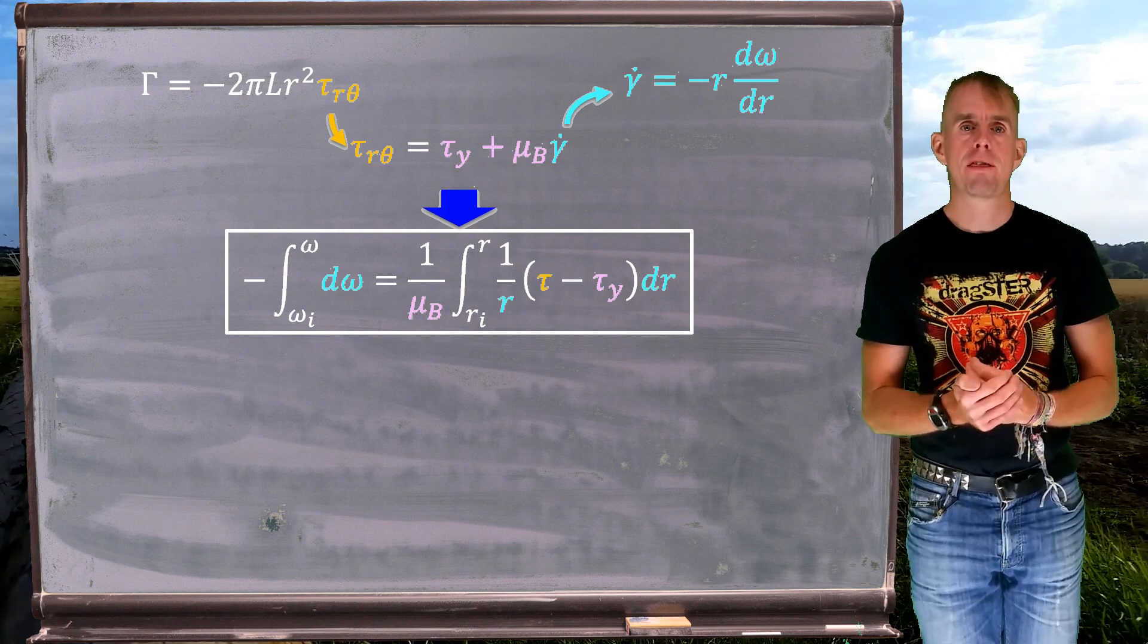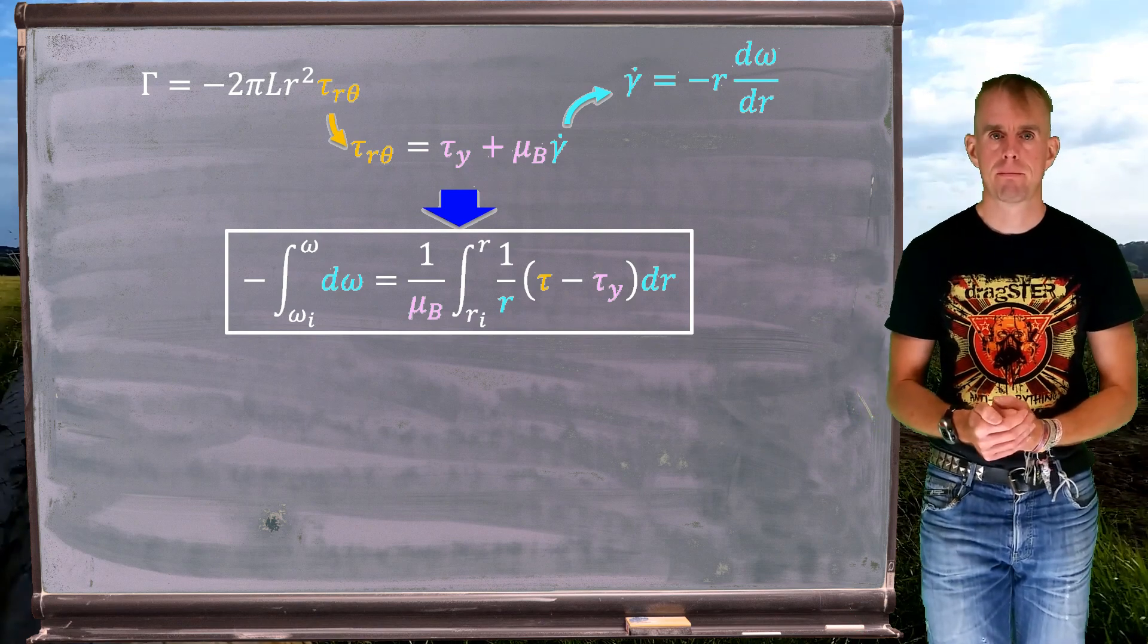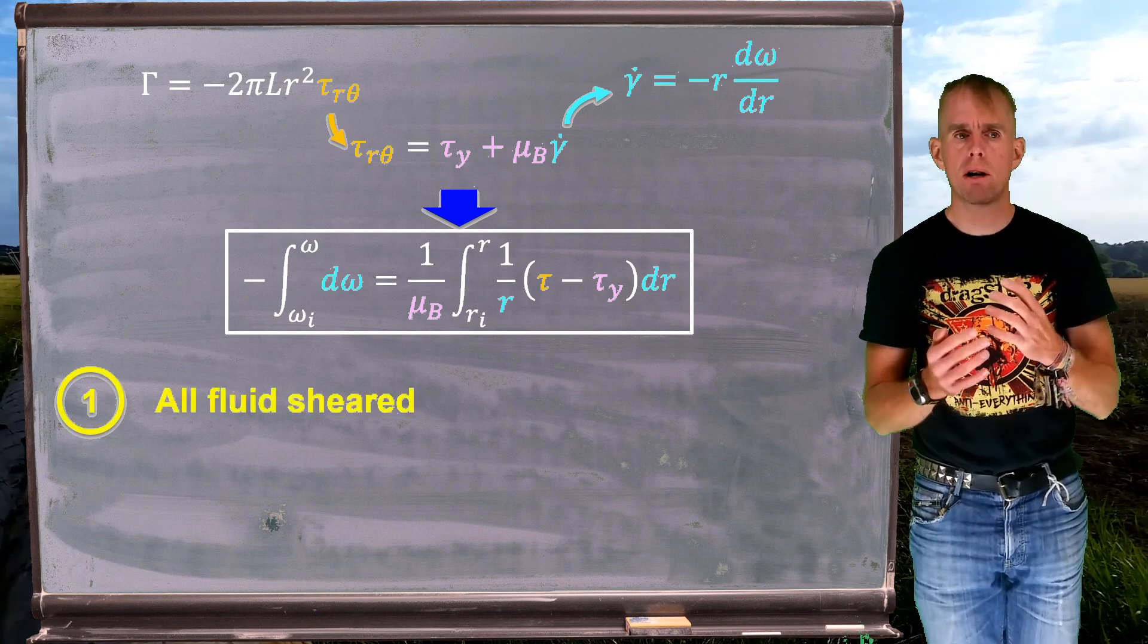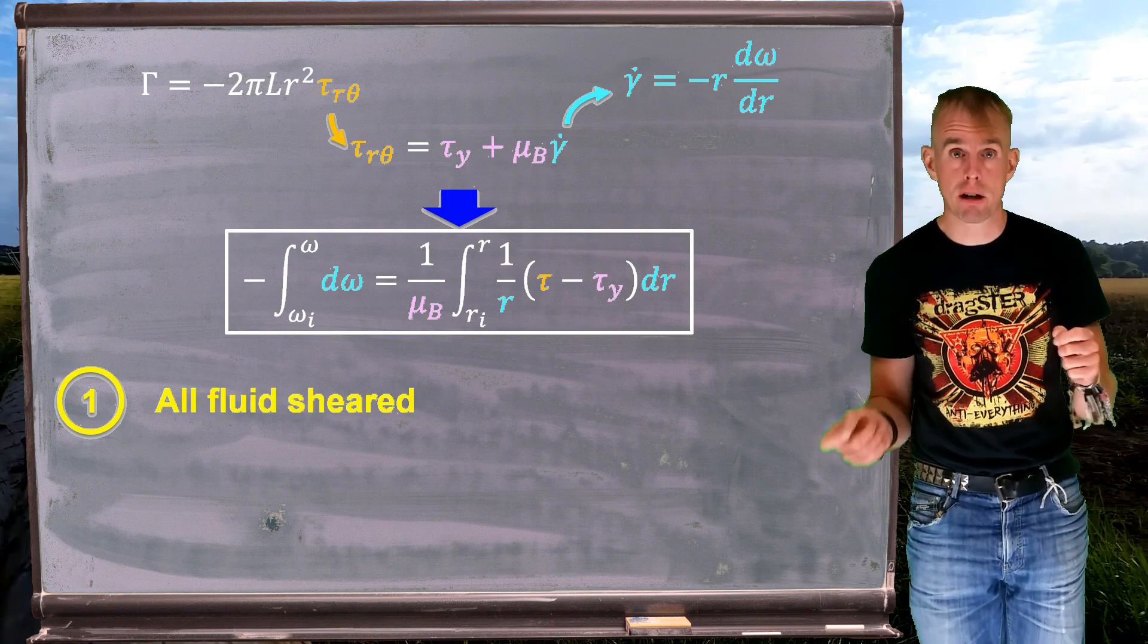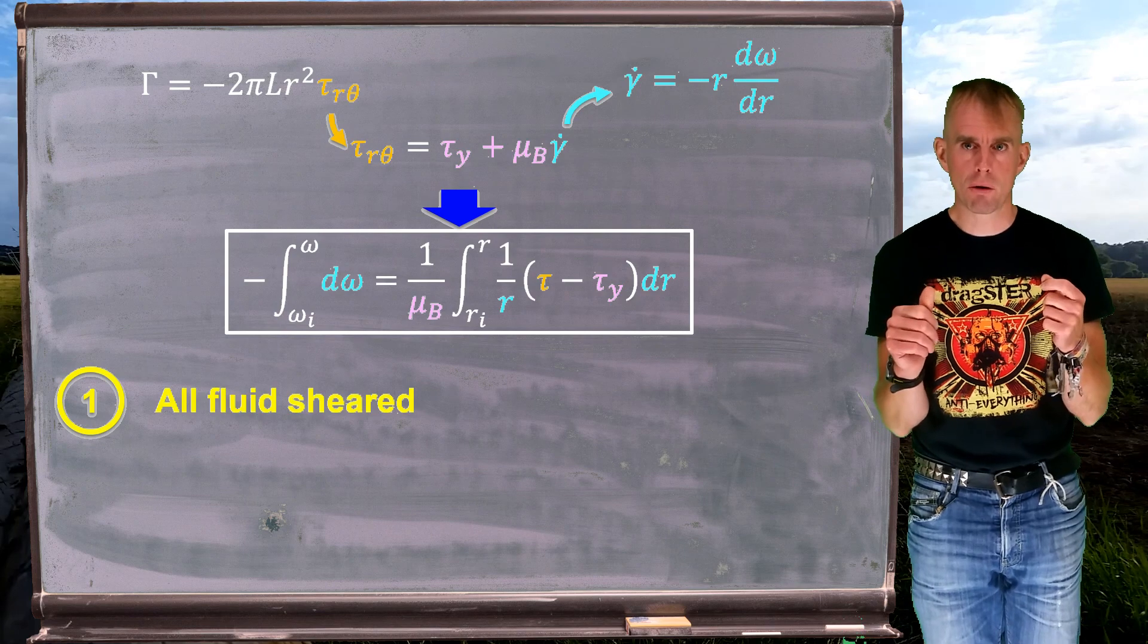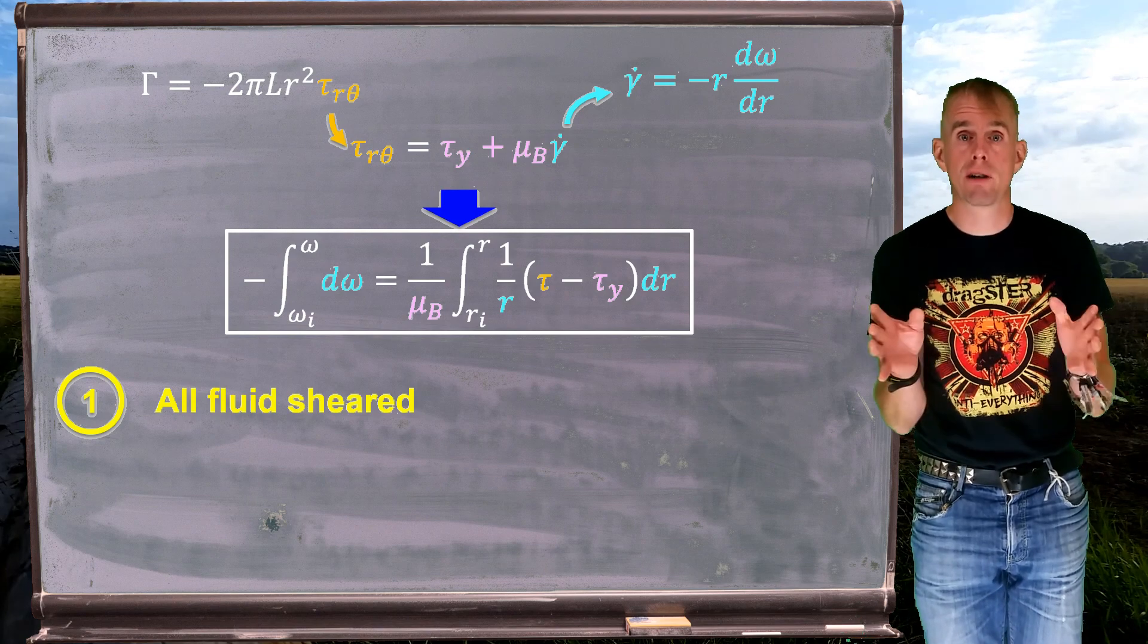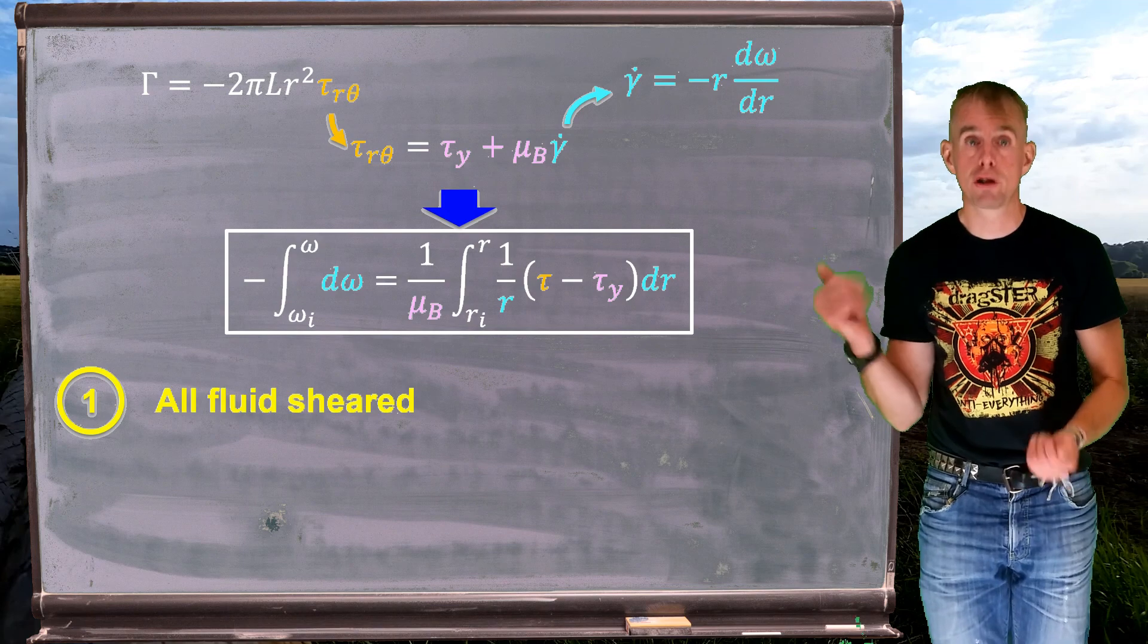Let's pause for a second and think what the flow in the Couette might look like. Let's introduce some cases. So case one: We can imagine a flow scenario where all the fluid is sheared. There isn't a symmetry line in a Couette like there is in a pipe, and so therefore we can have high shear rate across that entire gap, which means that the stress developed in that entire gap is above the yield stress. So all our fluid could be sheared.